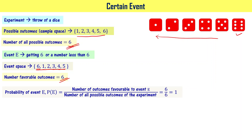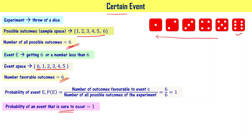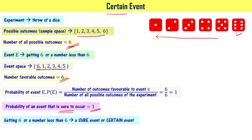When probability is 1, you know that the event is sure to happen. Getting 6 or a number less than 6 when you throw a dice is a sure event. Similarly, when you write an exam, the probability of getting a score less than or equal to 100 is 1 — that event is certain to happen. That's why it is called a sure event or certain event.